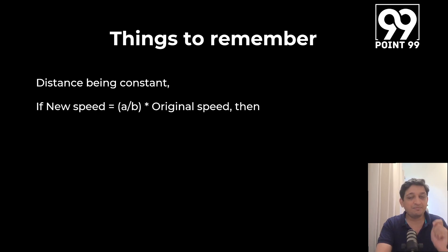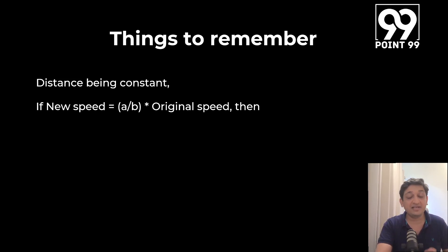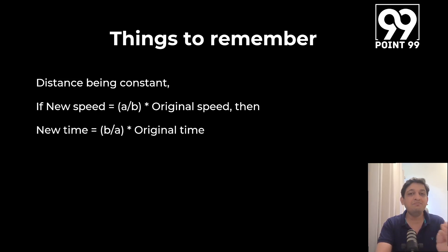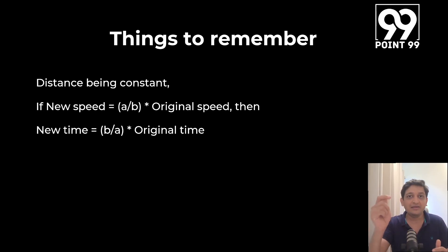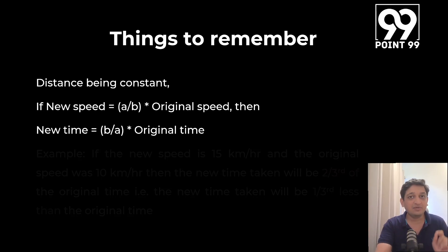There are a few additional things to remember. With distance being constant, speed multiplied by time remains the same, which means if the new speed is a/b times the original speed, then the new time will be b/a times the original time. You multiply speed and time and keep the product constant — if speed is multiplied by a/b, you multiply the other part by b/a to keep the product constant.